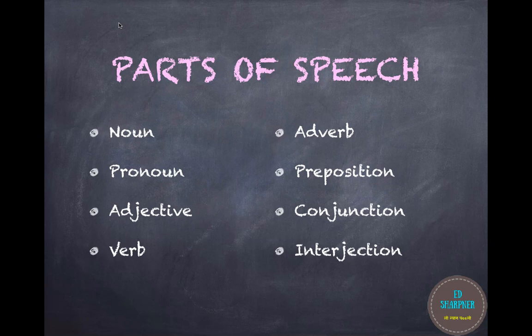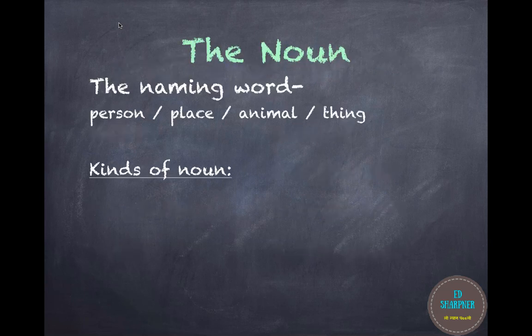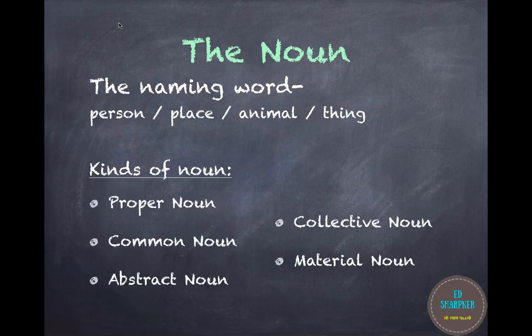In this video we talk about the noun. The noun is a naming word — it is the name of a person, a place, an animal, or a thing. Now let us look at the kinds of nouns. There are five kinds of nouns.